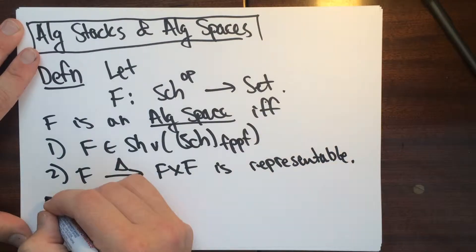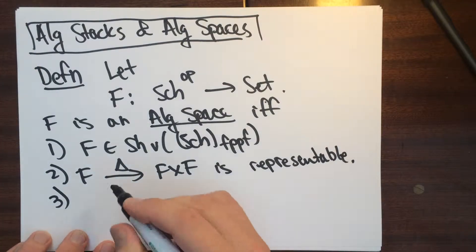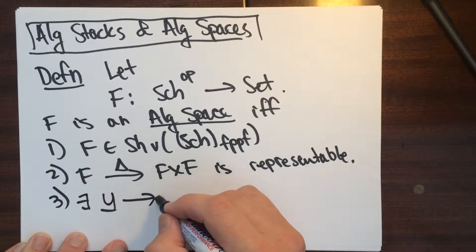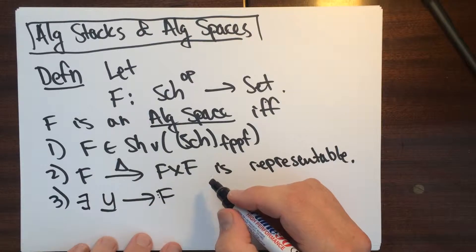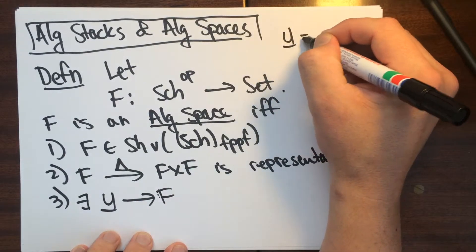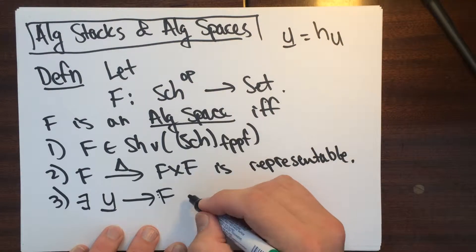By a scheme, and the third thing that we ask is that there exists a morphism from a scheme to F. So this is going to be in this situation, this is going to be h of U, which is surjective.